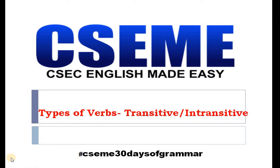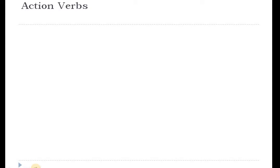Last week, we looked at subject-verb agreement. And this week, we're going to be looking at types of verbs. Three different types of verbs will be covered in this video. We're going to briefly look at action verbs, and then we're going to look at transitive and intransitive verbs. Let us begin. And once again, if you have any questions or comments, please comment below. If you have any requests for any topics, please let me know.